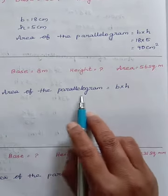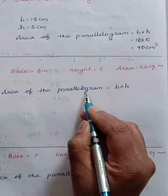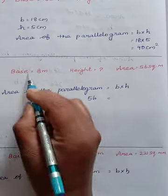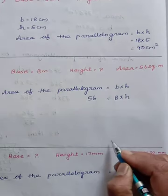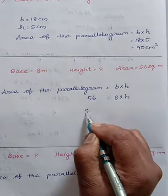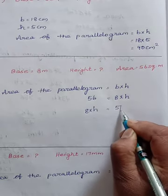We know that area of a parallelogram is base into height. Area is given as 56, so let us write 56. And the base is 8 into height. We do not know the value, let it be h itself. So 8 into h, first I will write here. I will take to the left hand side and here I will take it to the right hand side.